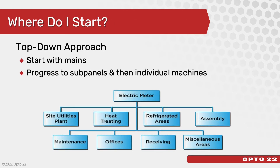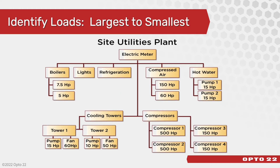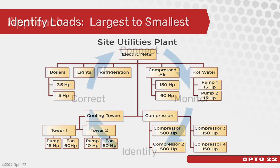So where do you start? We recommend a top-down approach. Start with the building mains, then progress to sub-panels and individual machines after that if possible. What you want to do is identify your loads, largest to smallest. With a product like the RIO EMU, as you'll see, even connecting to and monitoring very small loads is very cost-effective.